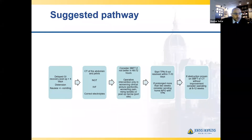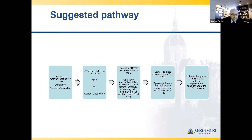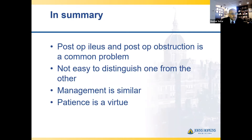Here is a pathway I propose for these cases: if GI function has not returned at four days, get a CT scan, place an NG tube, give IV fluids, and collect electrolytes. If not better two to three days later, do a small bowel follow-through, and only consider surgical intervention if warning signs are present — worsening pain, lactatemia, et cetera. By seven to ten days, if not better, start TPN. Within about two weeks, consider sending them home on TPN with no plan to re-intervene sooner than eight to twelve weeks. In summary, post-op ileus and bowel obstruction are very common problems, not easy to distinguish between the two, management is similar for both, and patience is a virtue. Thank you for the opportunity to present.